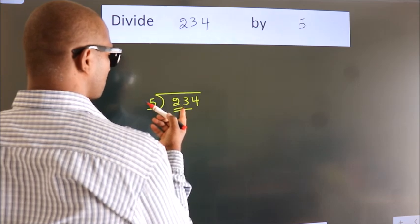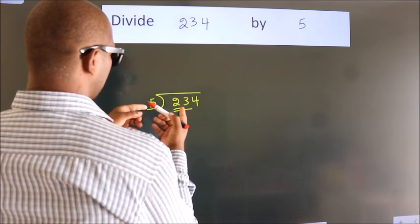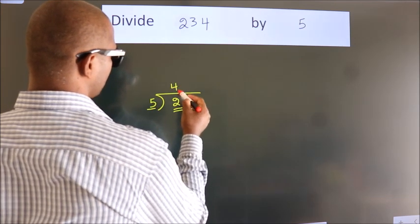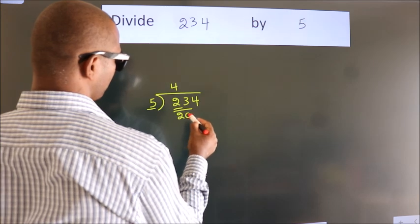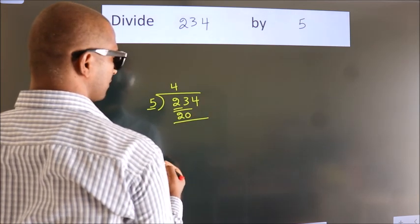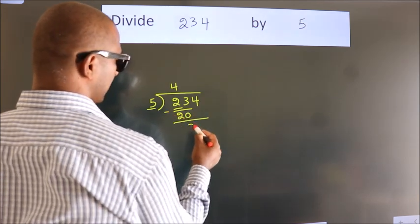A number close to 23 in the 5 table is 5 times 4, 20. Now we should subtract, we get 3.